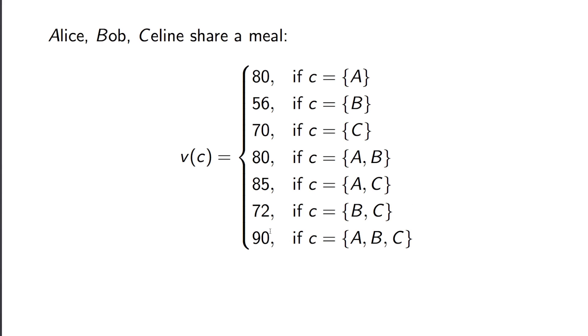But here's the value of the grand coalition, it's 90. So the actual bill at the end of the day is 90. And then we have similar values for all the other possible coalitions.